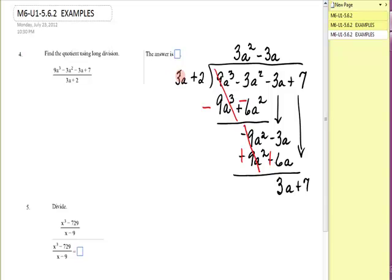What do you have to multiply 3a by to get 3a? The answer's 1. 1 times 3a is 3a. 1 times 2 is 2. Final time. Change, change. That gives me a remainder of 5. It's a positive 5, so I'll put a plus sign. 5 over 3a plus 2. Pretty long answer.